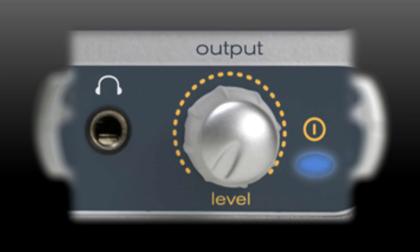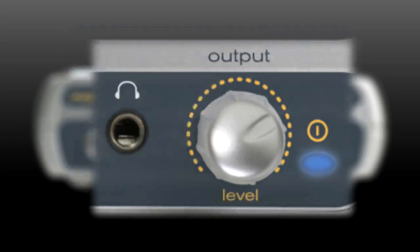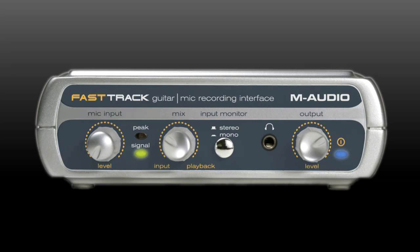The output level on the right controls the headphone and line outputs for your speakers. Sing into your mic or play your guitar and slowly turn up the level. You should hear your input signal in your headphones or speakers. Turn the mix knob to the right and notice how your input signal fades out.